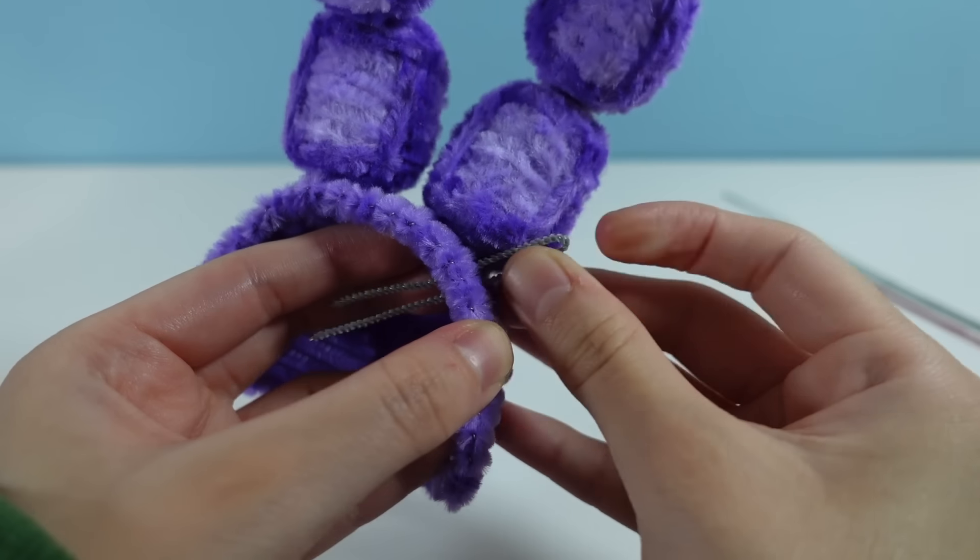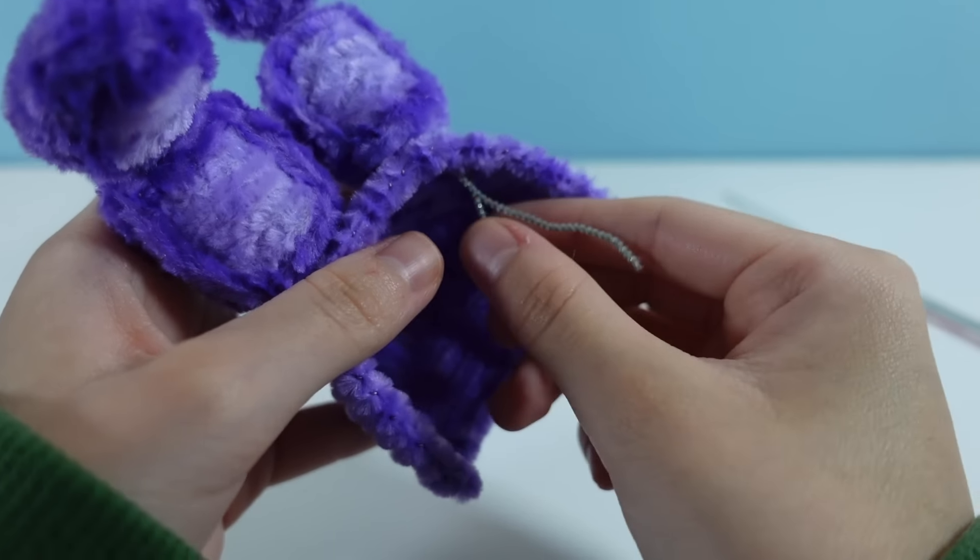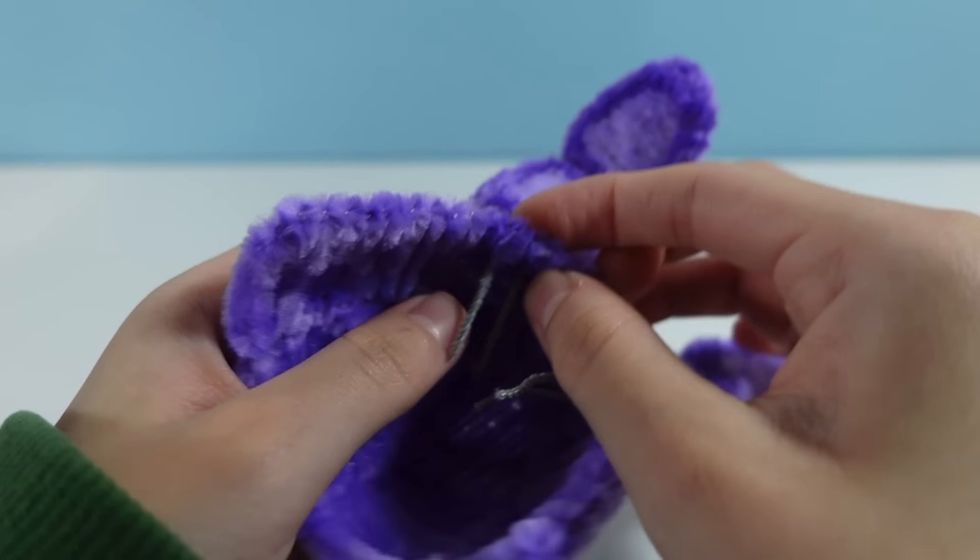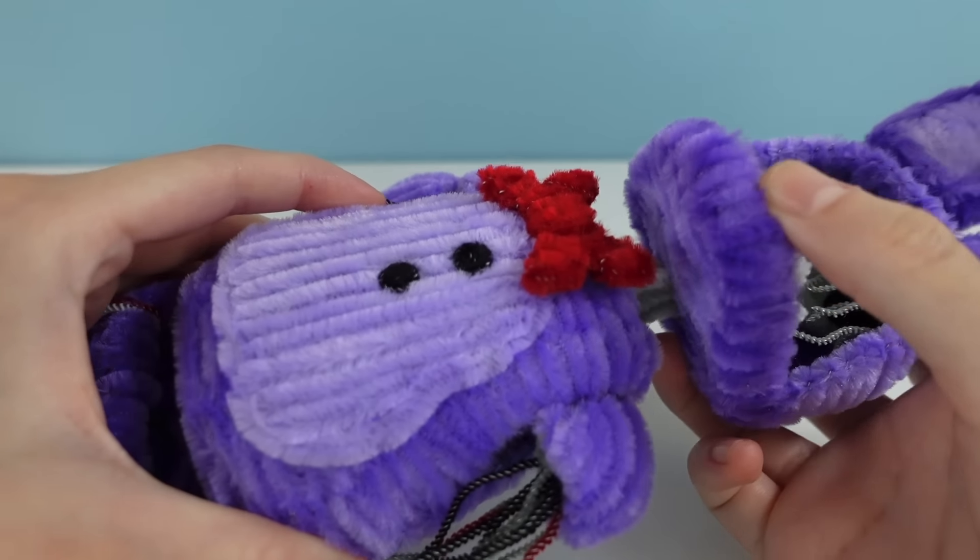And for the wires in the head, I bent some pipe cleaner in half and then stuck them through the top. And when I was done, I then attached the jaw to the head piece. Finally, I stuck the neck into the torso and wrapped them together.